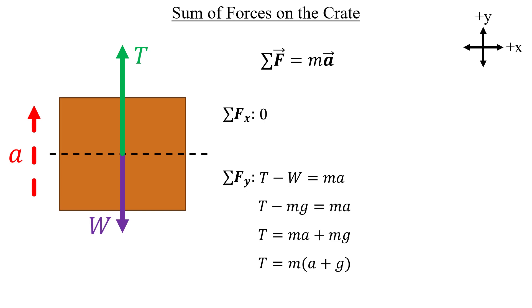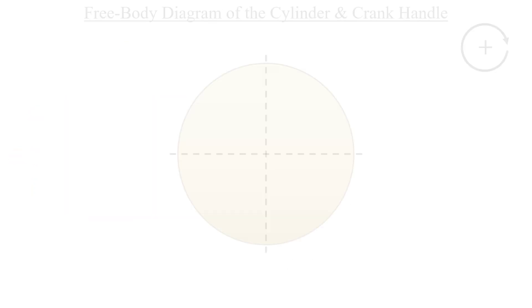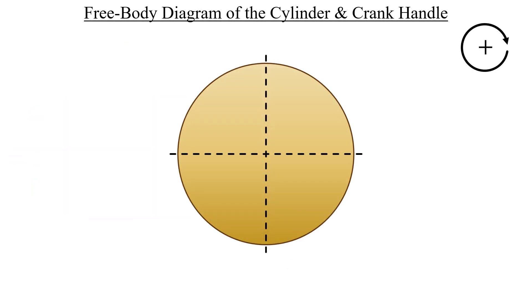For now, let's move on and create a free body diagram for the cylinder and the crank handle. I'll start by labeling the cylinder's radius as capital R. And the only force acting on it is the tension of the rope, which pulls downwards as it supports the crate.